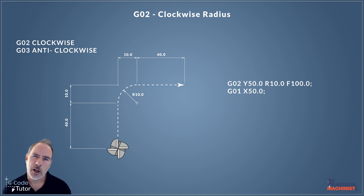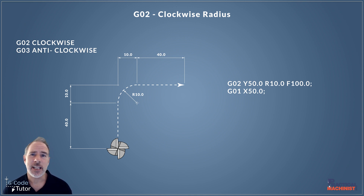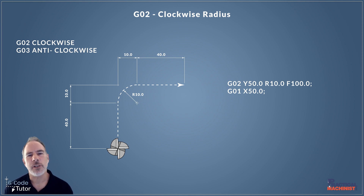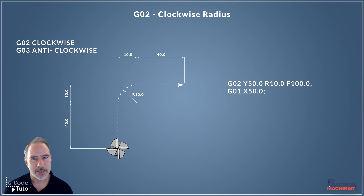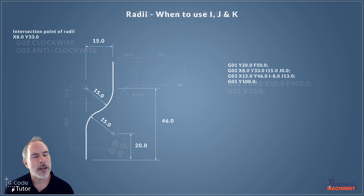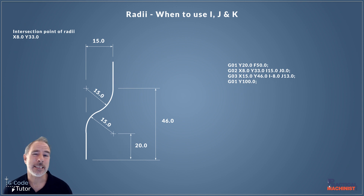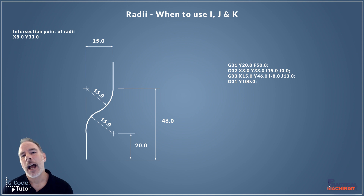A good rule of thumb that I always go by is if we're cutting a 90 degree or 180 degree radius, I would use an R value. These are designed for corner radiuses, so R would be the right way to program this. But if we're doing compound radiuses — that's a bit more complex — and radiuses that blend together, we would use I, J and then possibly K for the Z axis.